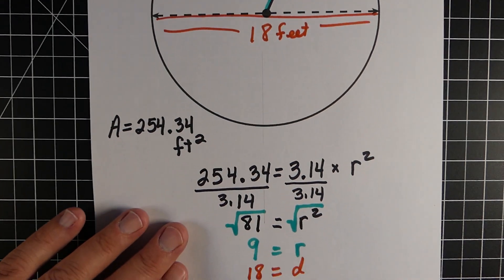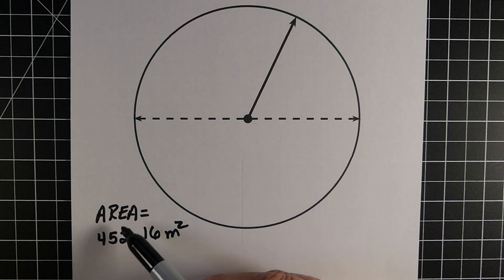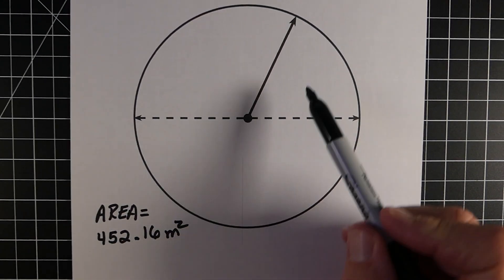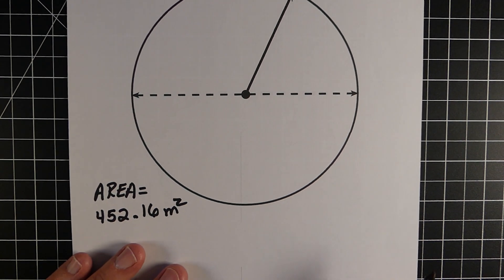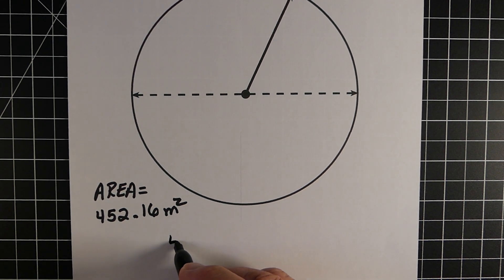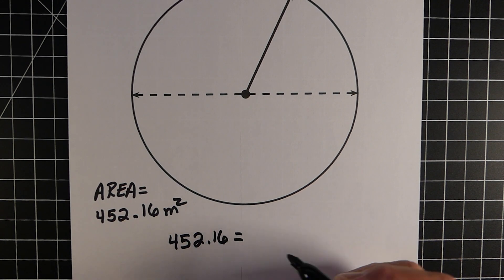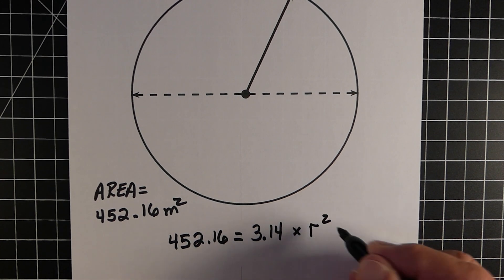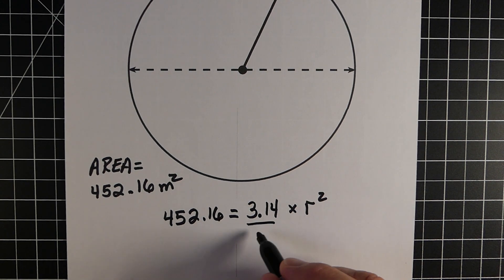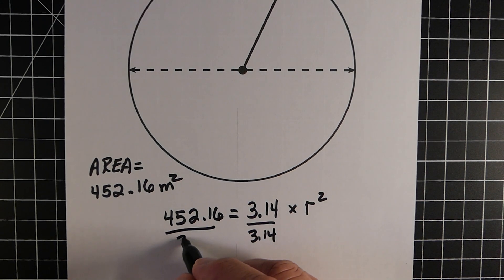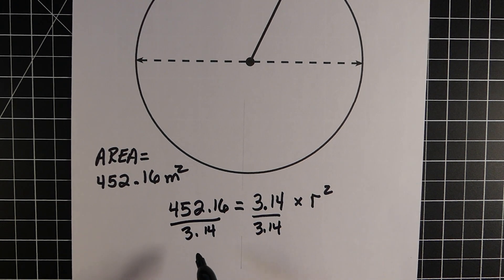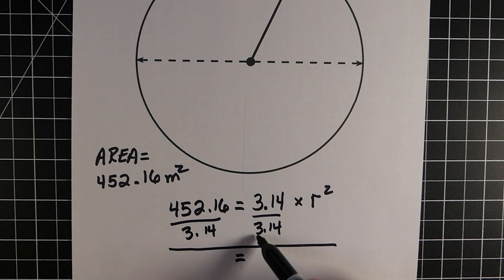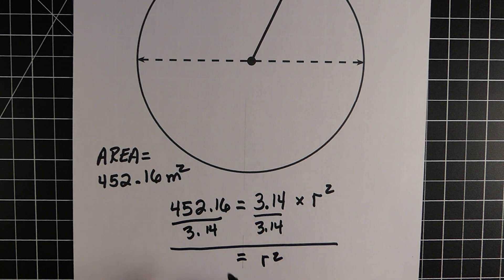In example number 2, just like the first one, we already know the area: 452.16 meters squared. We're trying to find both the radius and the diameter by working backwards. Using the formula pi times radius squared, we divide both sides by 3.14. Pi is eliminated on the right side, leaving radius squared. On the left side, dividing gives us 144.